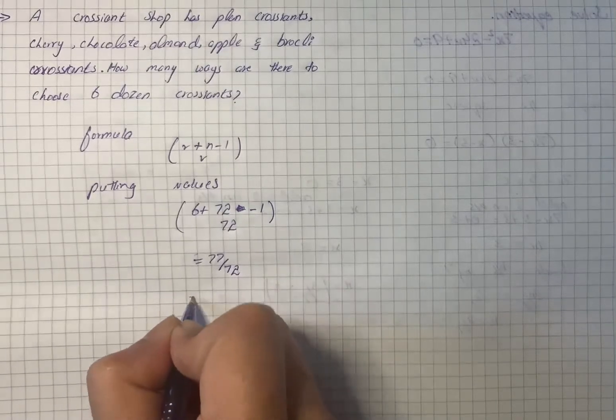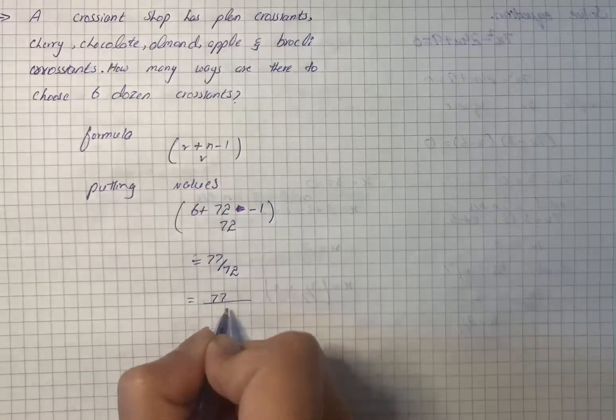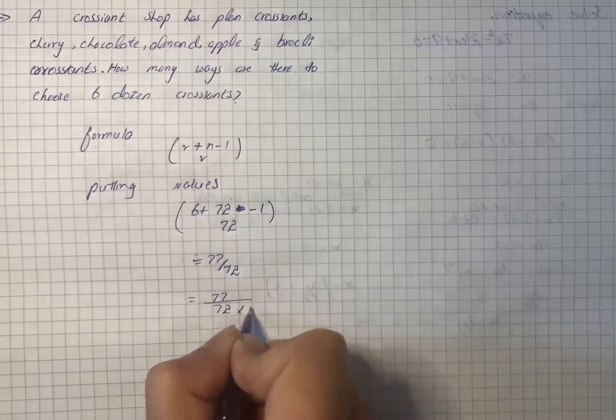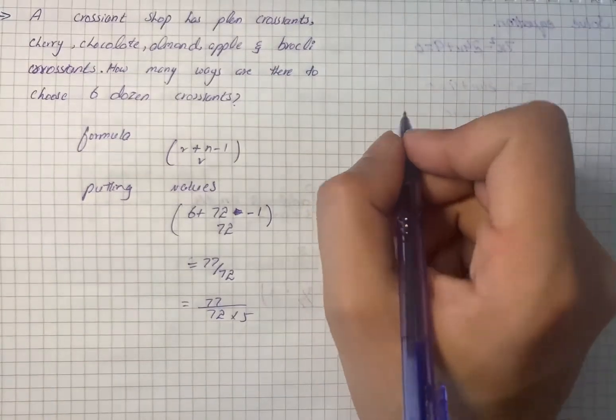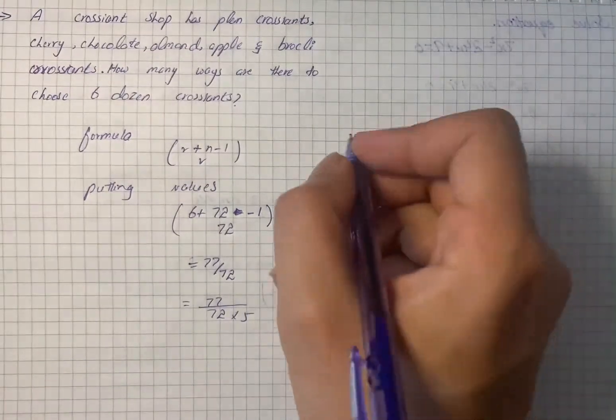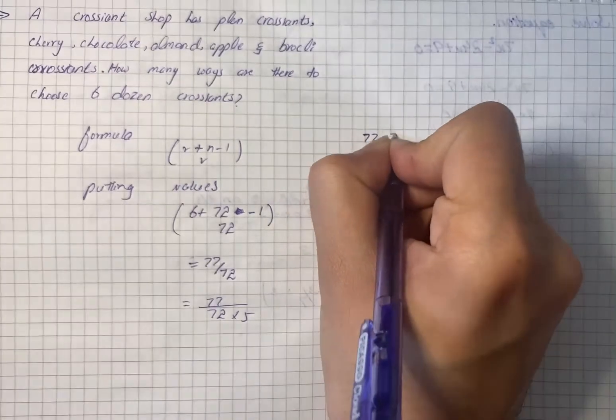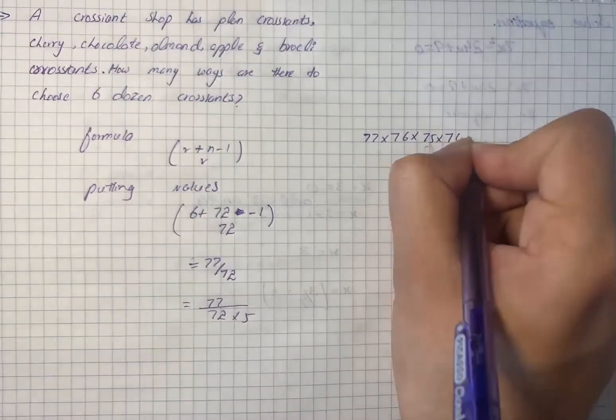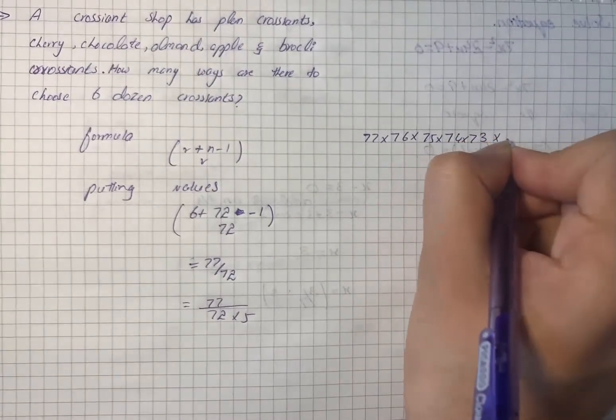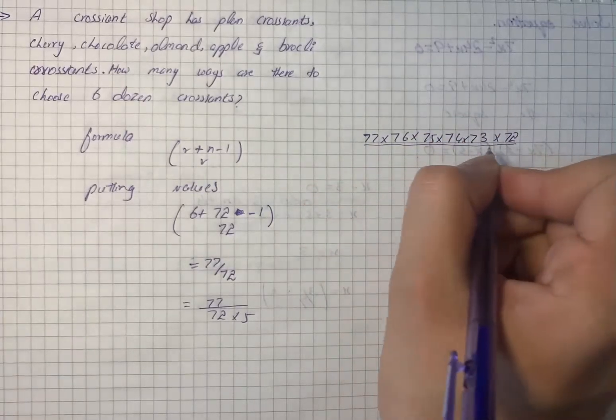On further simplification, we have 77 choose 72 multiplied by 5. Then we will multiply the number of ways, so we have 77 multiplied by 76 multiplied by 75 multiplied by 74 multiplied by 73.